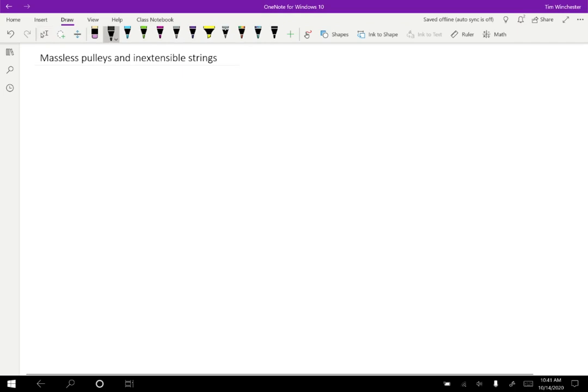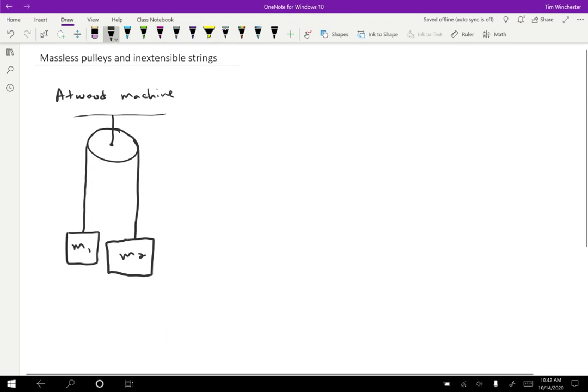The example I want to do is a device called an Atwood machine, which makes it sound more complicated than it is. Essentially what an Atwood machine consists of is a pulley that's attached to the ceiling. We're going to have a string with some mass M1 on the left, the string then runs over the pulley and comes down the other side to another mass M2. I'm drawing M2 slightly larger so that we have something to work with.